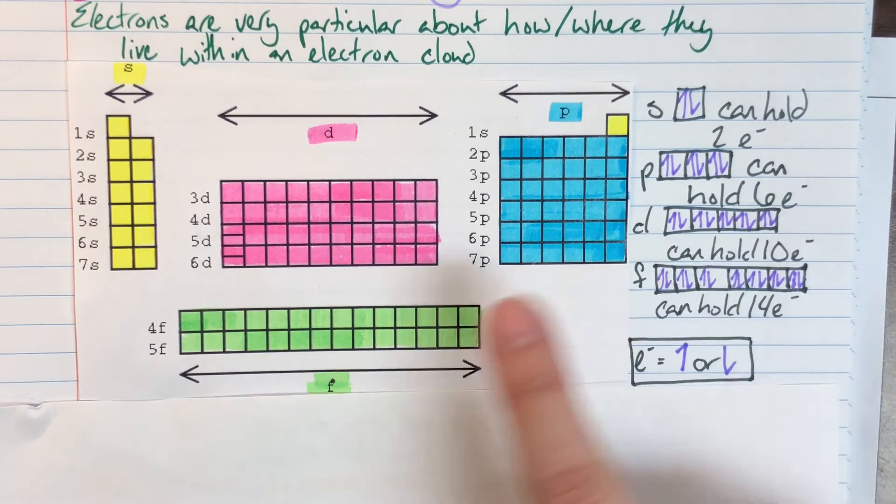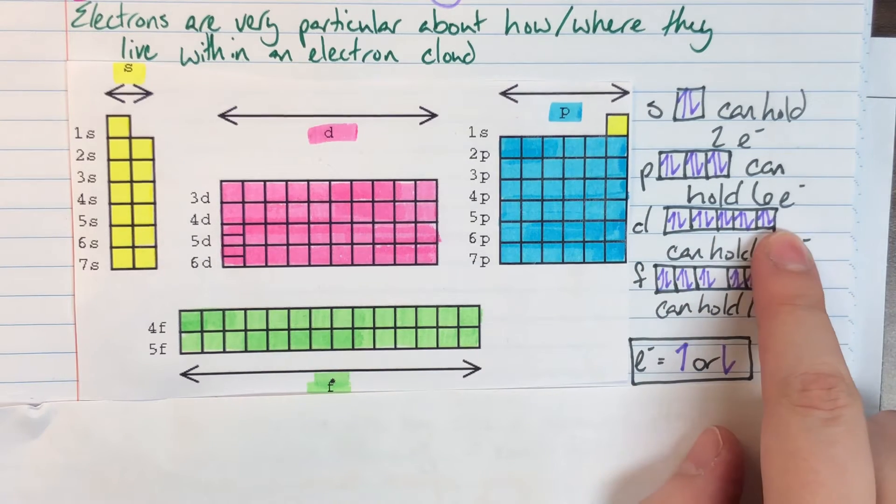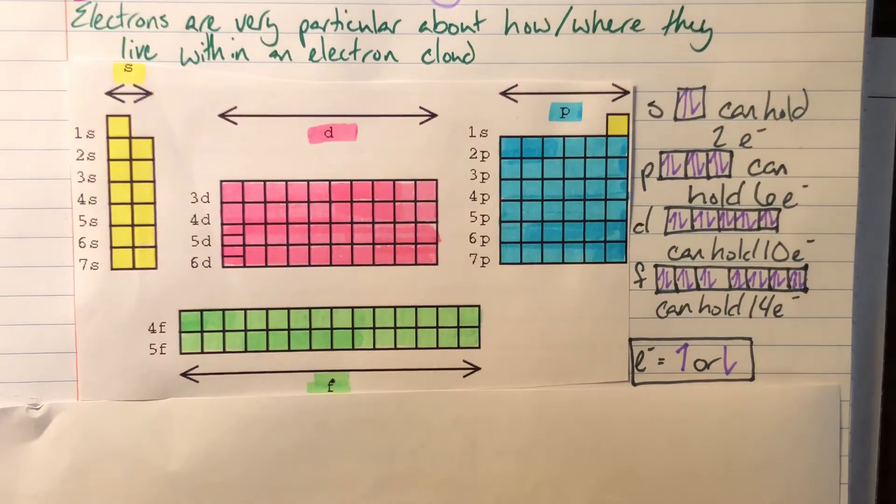My D block of electrons can contain ten electrons. Since I have ten electrons and I need one box per two electrons, that would get me to five total boxes here. And then I have my F block, which has a total of 14 electrons. I need one box for every two electrons, so that would get me to seven boxes.